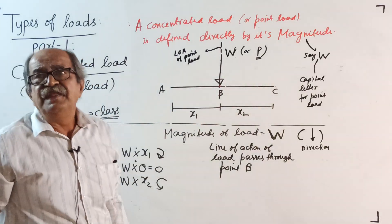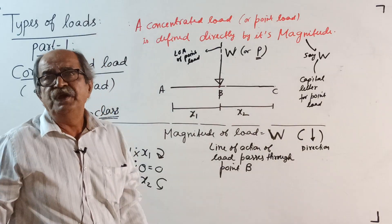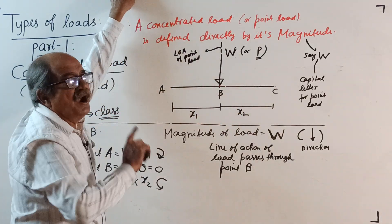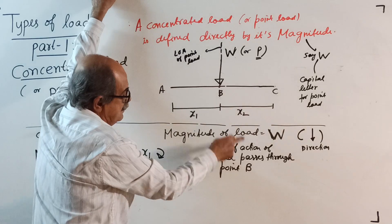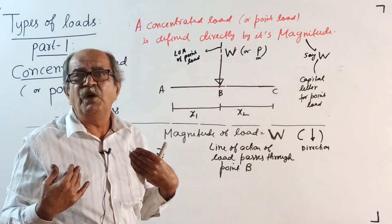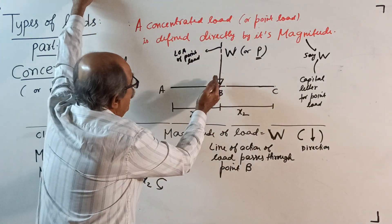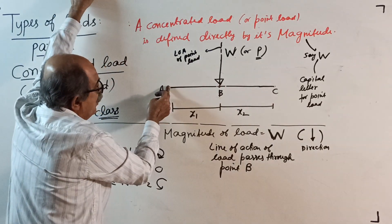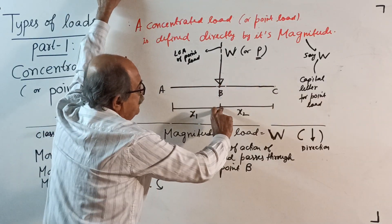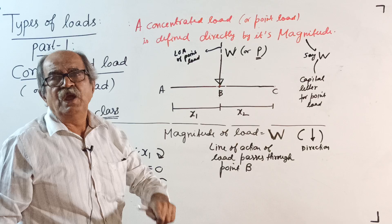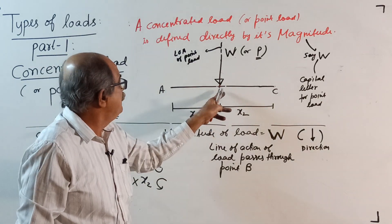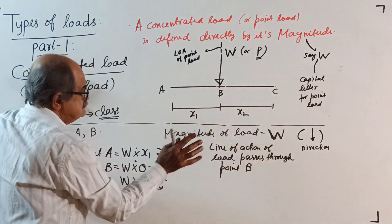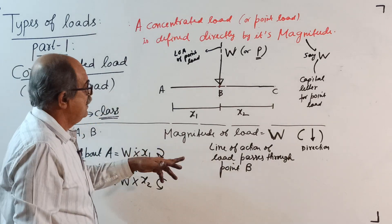We already defined the magnitude, marked the line of action, and marked the point which lies in its line of action. Now consider two points: I call the point B — why B, that is my choice. One point on the left side, one on the right side. Say A and B. Let point A be at x1 from here, and let point C be at x2 from here. Do not memorize by heart — when I go to the next example, A and B will change positions.